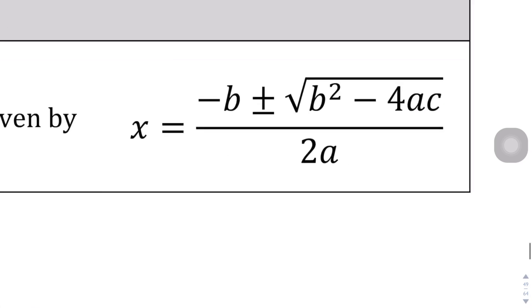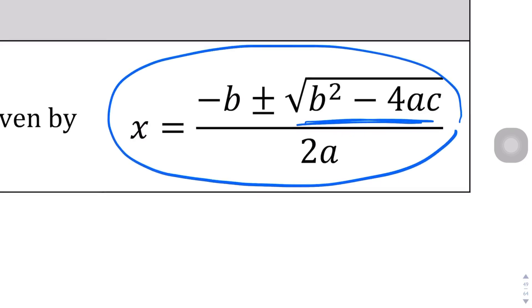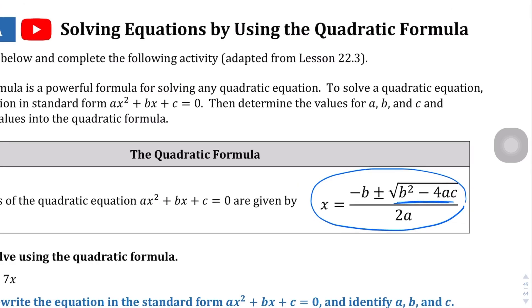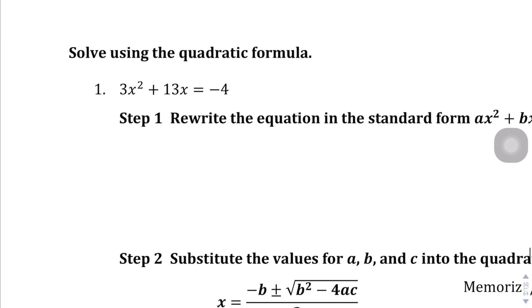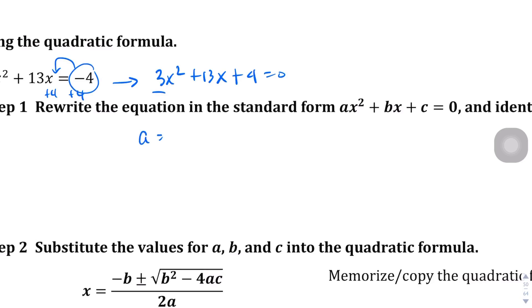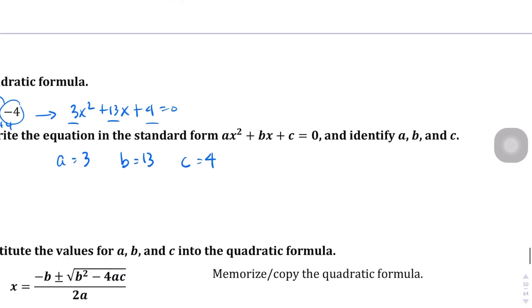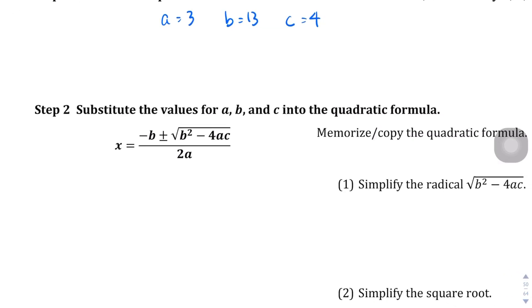Now let's jump into the full quadratic formula — we were only working with the discriminant part before, but now we'll use the whole thing. First, we need to rewrite the equation so that c is on the same side as the rest. We add four to both sides and get 3x squared plus 13x plus 4 equals 0. So a equals 3, b equals 13, and c equals 4.